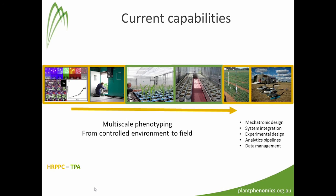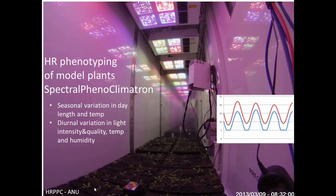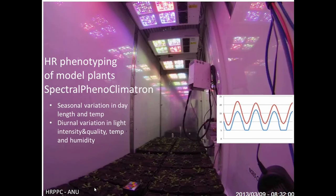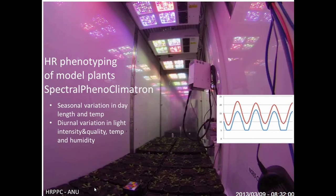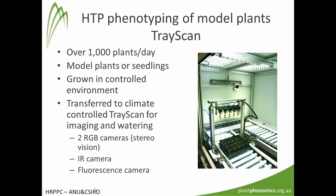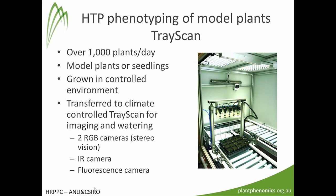We offer capacity at a whole range of scales from controlled environments on model plants to the field. In terms of model plants, there's Justin Borowitz's spectral phenoclimatron, which has programmable LEDs — six different wavelengths — so you can mimic any light quality found anywhere in the world, and is being used to see how different genotypes perform under different light regimes from different global locations. We've got the TracScan, which is high-throughput phenotyping of small model plants like Arabidopsis and Brachypodium — there's one at ANU and CSIRO.